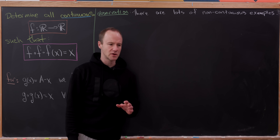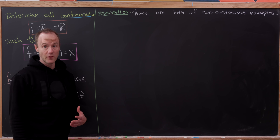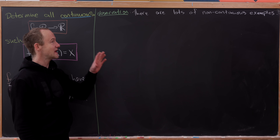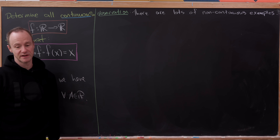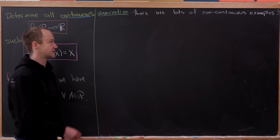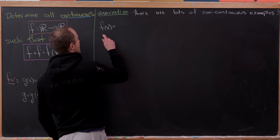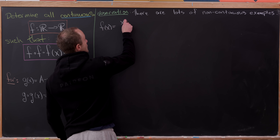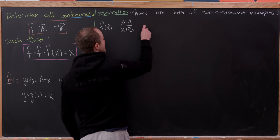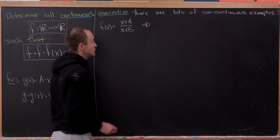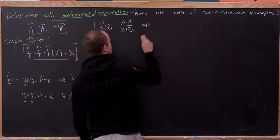I'd also like to show that we've got a nice infinite family in the three-fold composition case as well, if you loosen the need for the function to be continuous at all real numbers. We're going to construct this example by defining f(x) = (x + A) / (x + B). Let's first look at the two-fold composition, and then we'll calculate the three-fold composition.